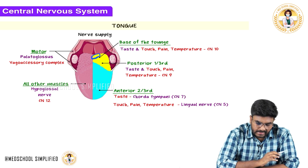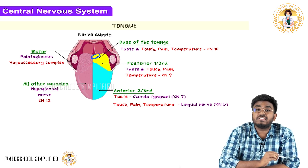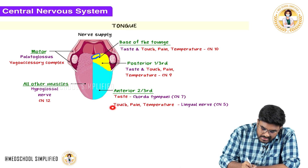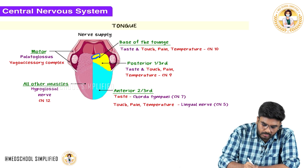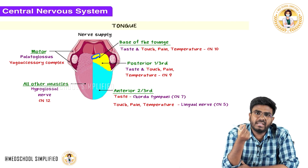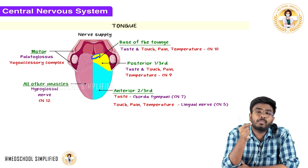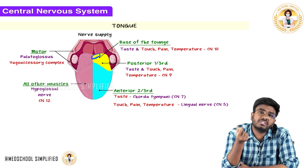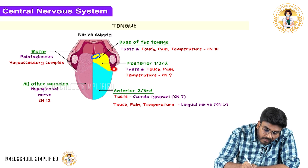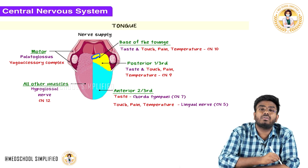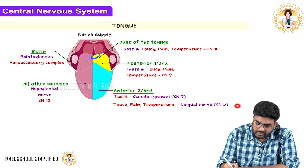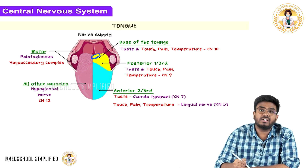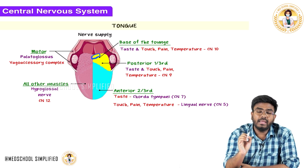Let's talk about general sensations first. General sensations like touch, pain, and temperature from the anterior two-thirds of the tongue — from that entire region — are carried by the fifth cranial nerve, the trigeminal nerve. The lingual nerve is a branch of the trigeminal nerve that carries these sensations.